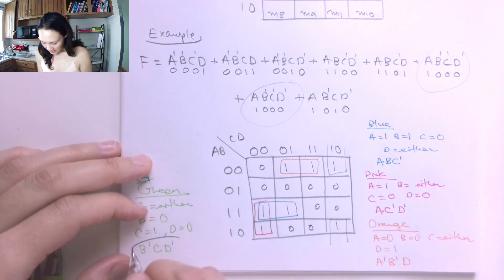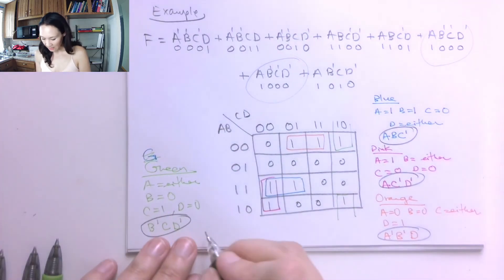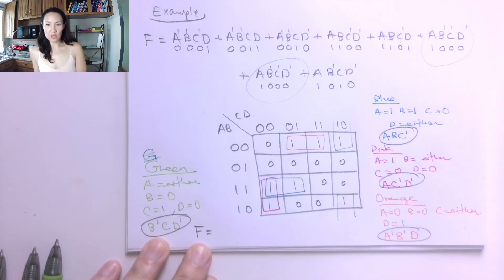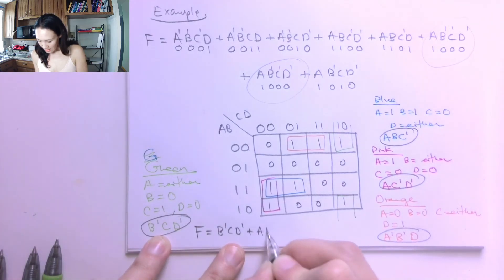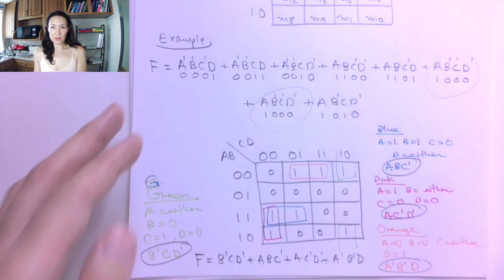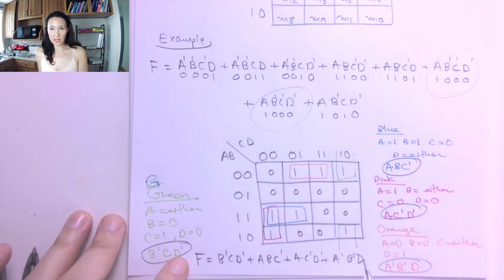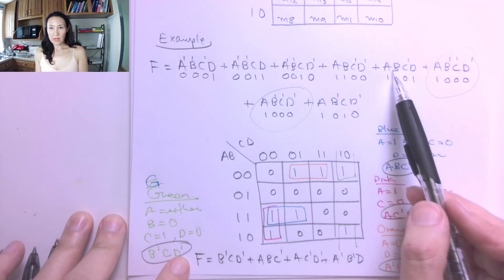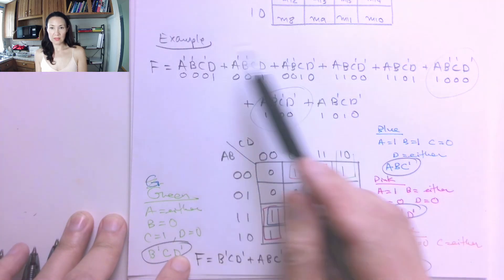So then what I do is I take all of these product terms that I reduced from my K-map, and I just simply add them together. So my reduced F function is going to be B naught, C, D naught, or A, B, C naught, or A, C naught, D naught, or A naught, B naught, D. So you can see this is a substantial simplification from all of these product terms down to just these. These are all, like, basically four input AND gates. And here we just have three input AND gates, and we have four of them instead of all of these.